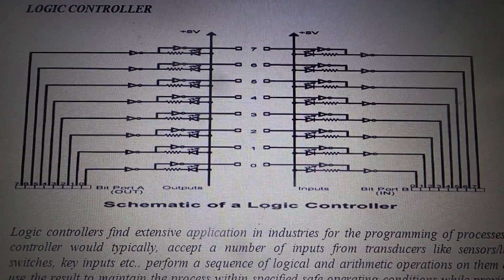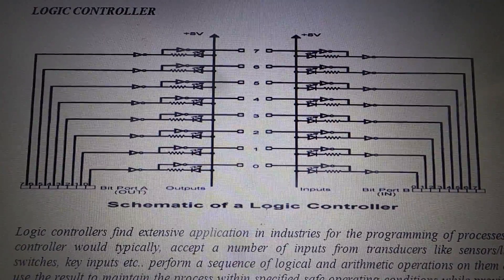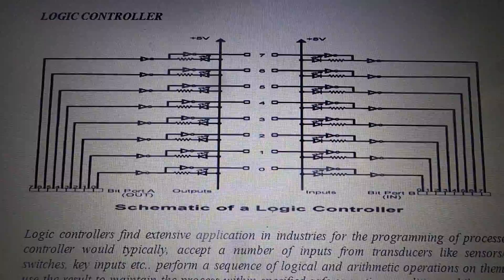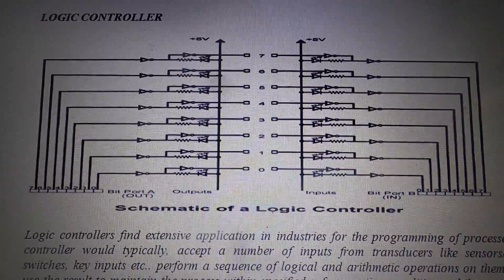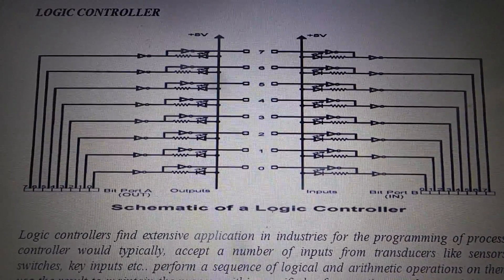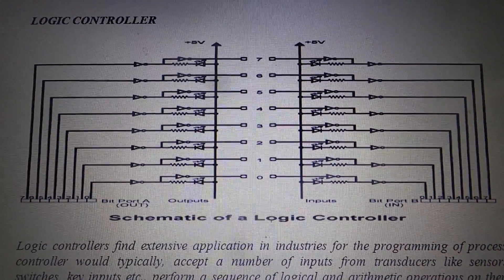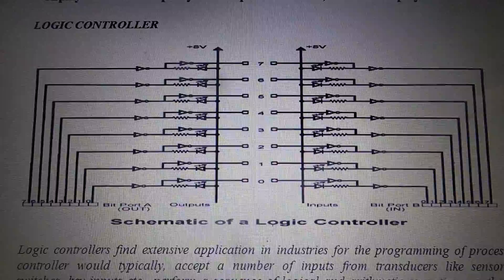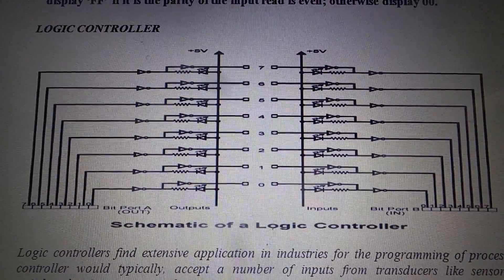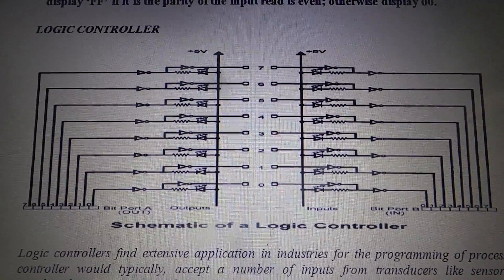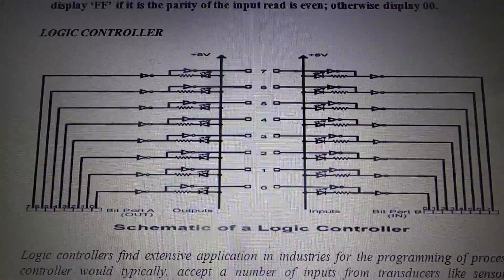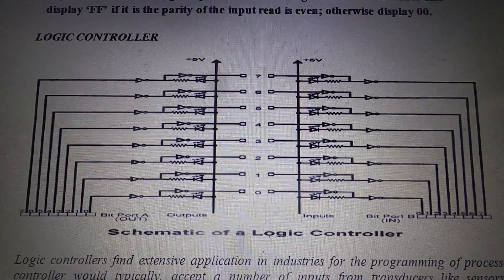If the control word is 90H, then port A is the input and port B is the output. If your control word is 80H, which generally is for programs which have only output values — like fire and rolling fashion displays — they require only output ports, so there you will be using the control word as 80H.